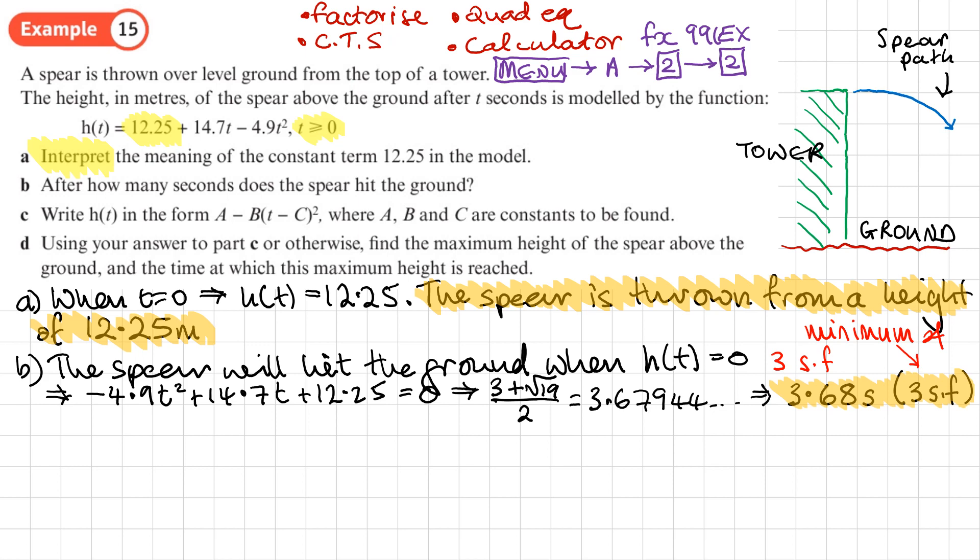Part C, we're asked to write H(T) in the form A - B(T - C)² where A, B and C are constants to be found. Now when we write something in this form, basically I've completed the square. It may look slightly different to how we're used to seeing it, because normally we would see the bracket part first and then the number at the end, but I'm guessing because it's a negative they've written it the other way around, but it's completing the square.